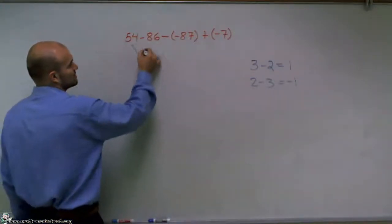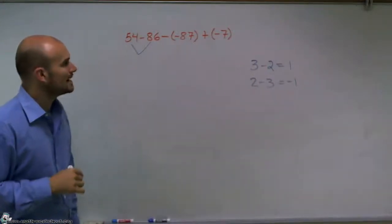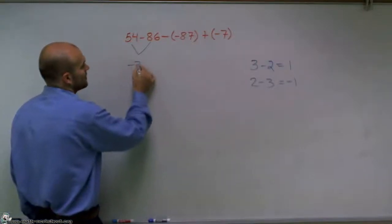So the first two numbers I'm going to subtract are 54 minus 86. And 54 minus 86 is going to give me a negative 32.